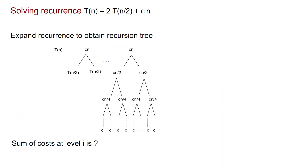Let us solve the recurrence T(N) = 2·T(N/2) + C·N. The basic idea is to expand the recurrence to obtain a recursion tree. We start with T(N) and replace it using the recurrence, giving a cost of C·N and two recursive calls T(N/2) and T(N/2). These can be further expanded, and we continue until we build the entire tree. At the bottom of the tree, we reach subproblems of constant size that can be solved from scratch, each at a cost of C.